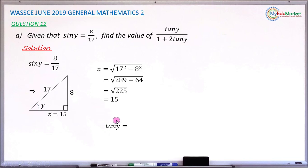So the tangent of y will now be equal to opposite, which is 8, divided by the adjacent, which is 15. So tan y would now be 8 over 15.